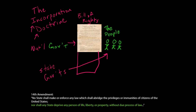So originally, the Bill of Rights did not protect us from the states. There was actually a Supreme Court case called Barron v. Baltimore where the Supreme Court specifically said the Bill of Rights does not protect citizens from state governments, just from the national government. But that has changed because we've changed the Constitution since then — we've added amendments.